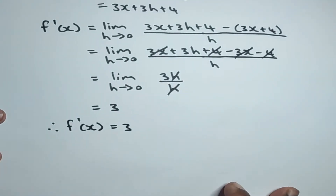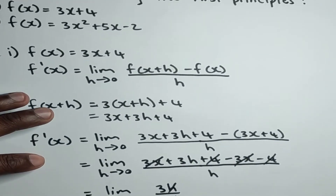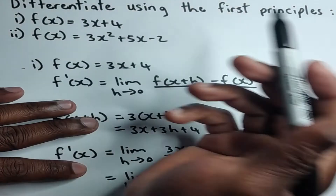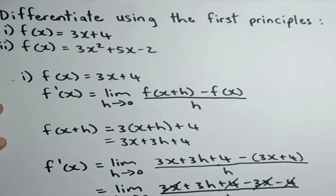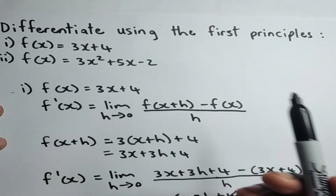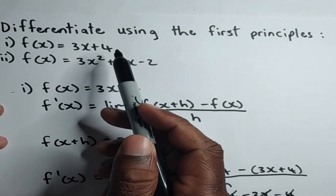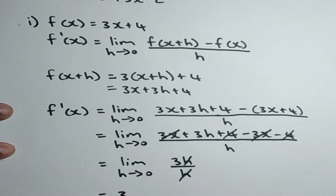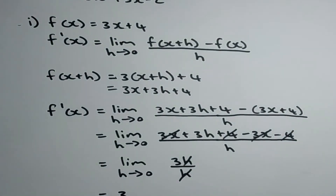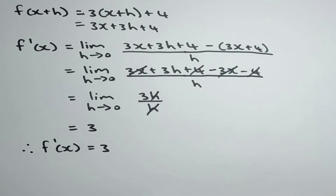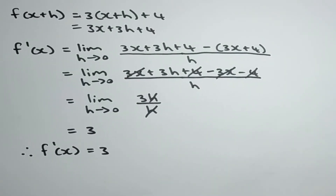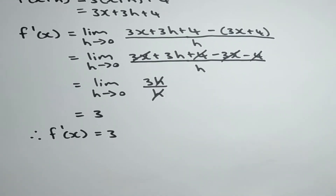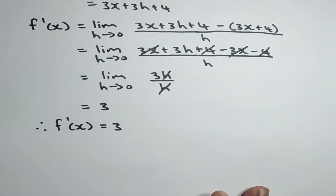If you remembered the power rule, you could have differentiated this using the power rule and the answer would already have been 3. So if you're not comfortable using the first principles formula, you can differentiate using the power rule first to know the correct answer, and that will help you be more accurate when using the first principles formula.